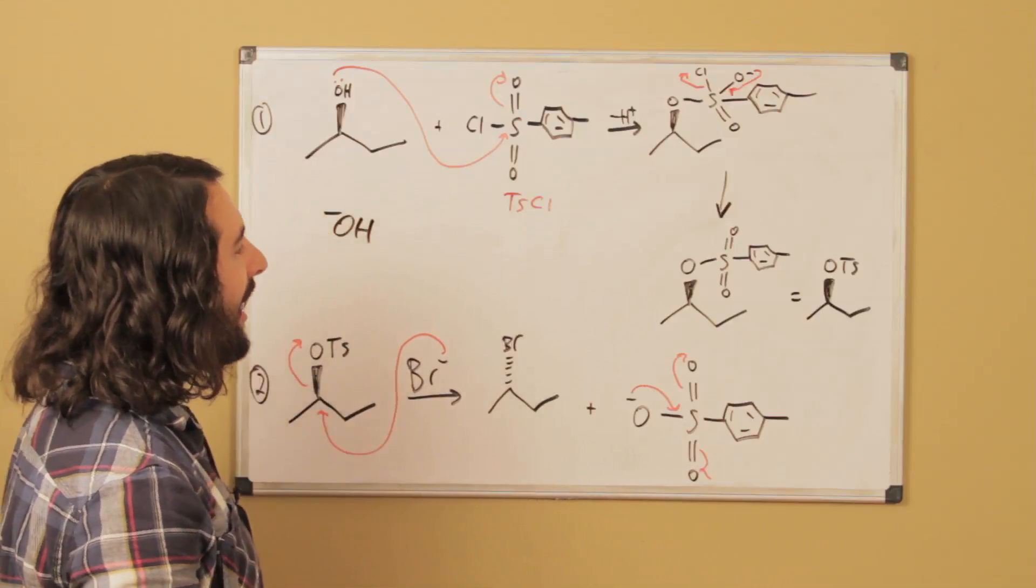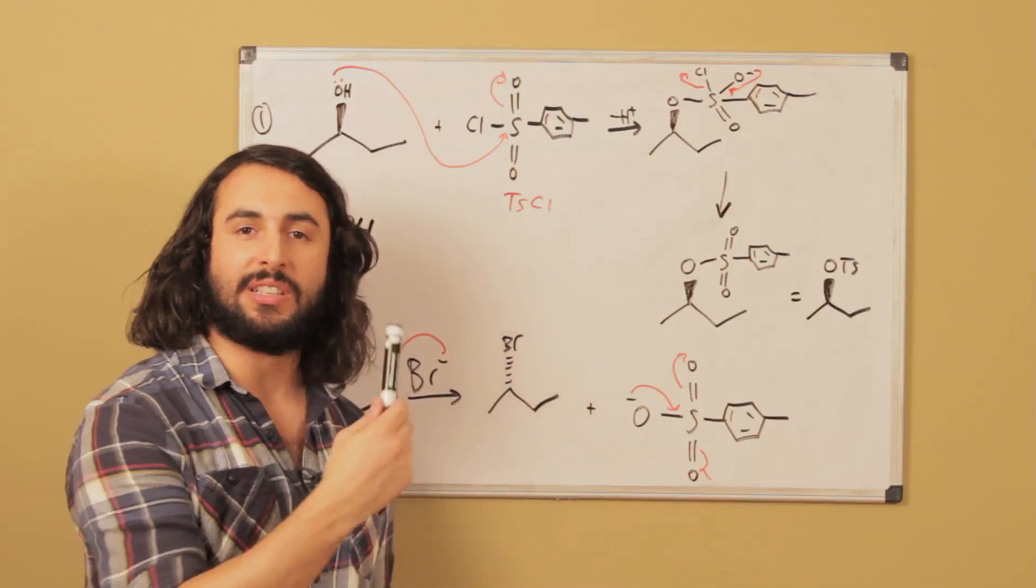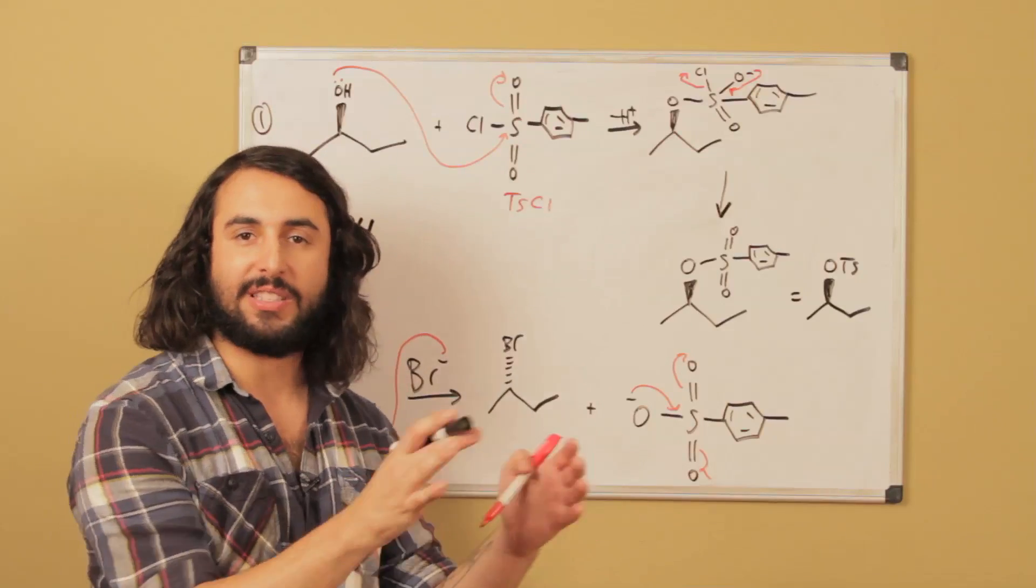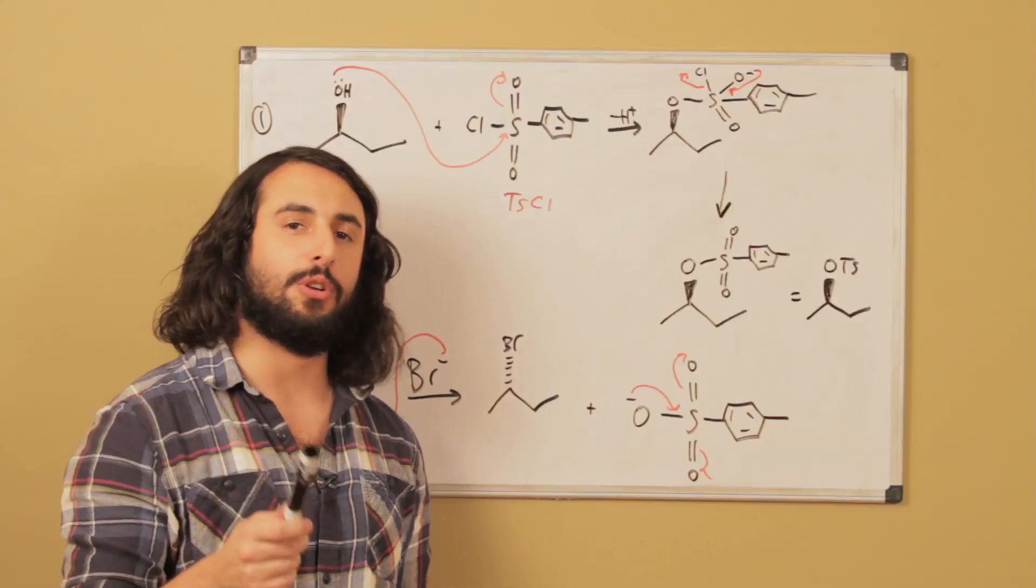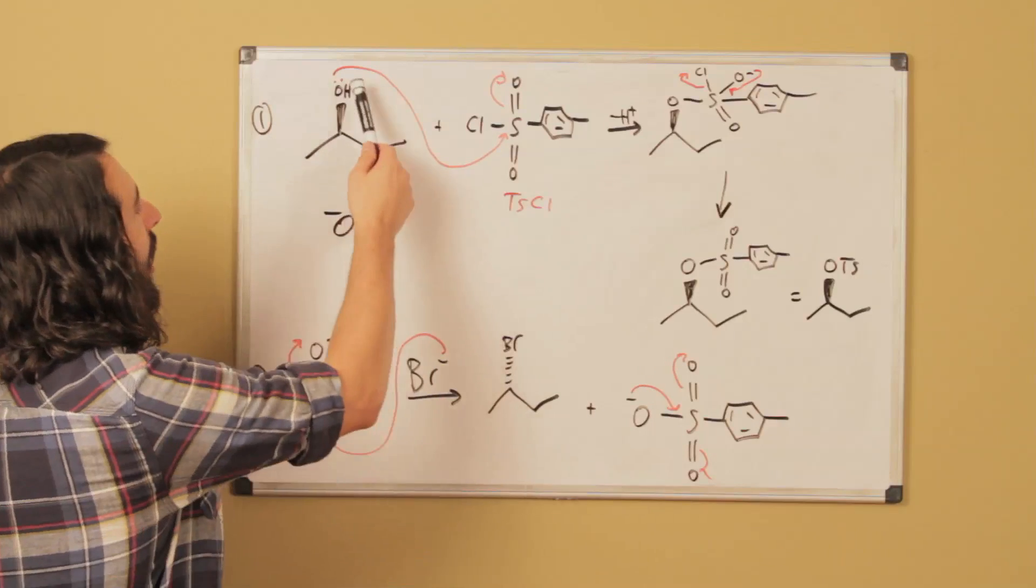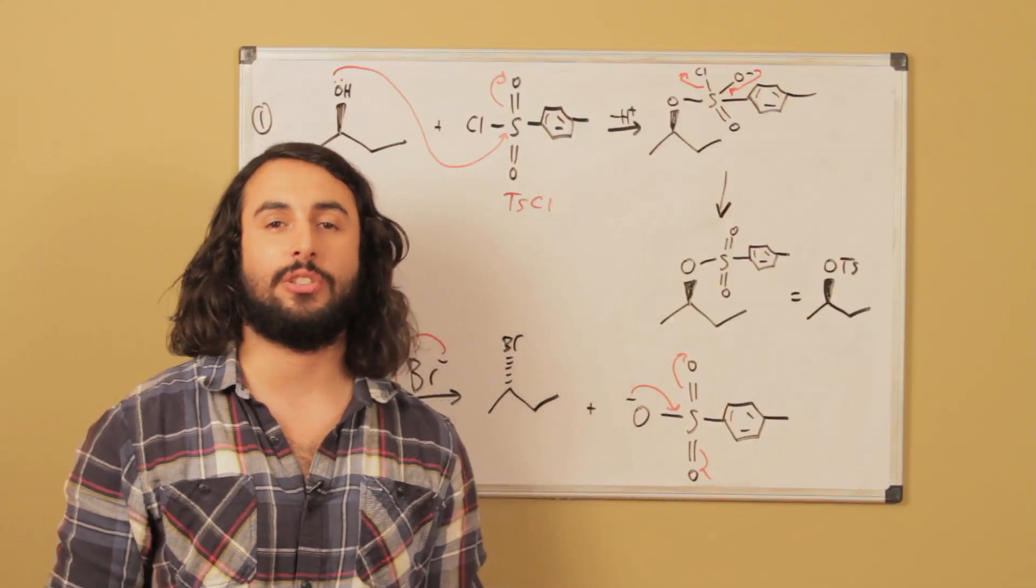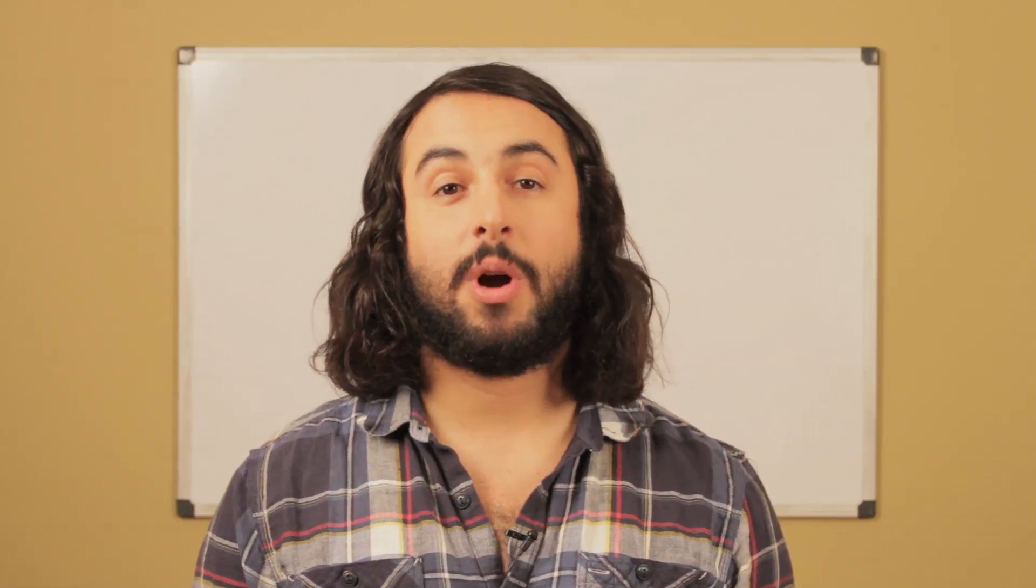And so basically we have learned that leaving group derivatives, whether we're using a tosyl group, mesyl group, or triflyl group, which may be useful for very specific circumstances - whatever the case may be, a leaving group derivative is a great way to turn a hydroxyl group into a good leaving group for an SN2 reaction. Thanks for watching, guys.